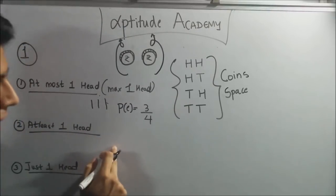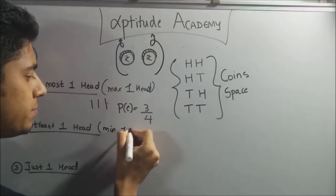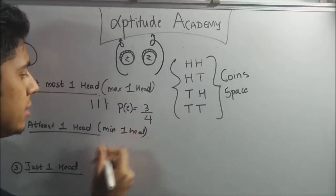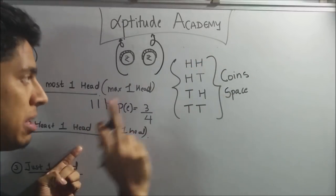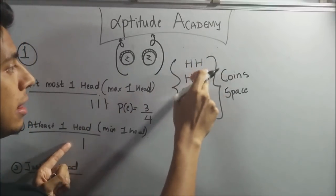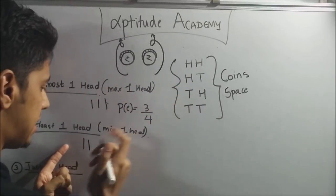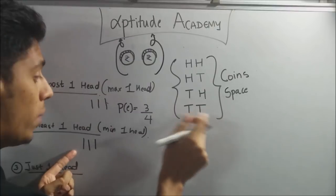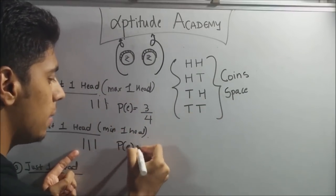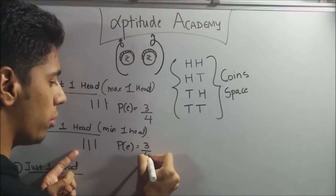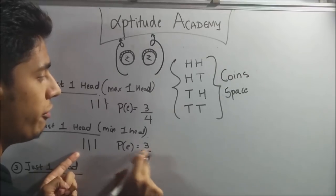At least one head. At least one head means minimum. Minimum one head. So now let's check it out. Does head head have at least minimum one head? Yes. This one has one head. Yes. Minimum one head. Yes. No heads. But we need at least minimum one head. Again, P(E) will be three by four. Three times you can have minimum one head and out of four times.